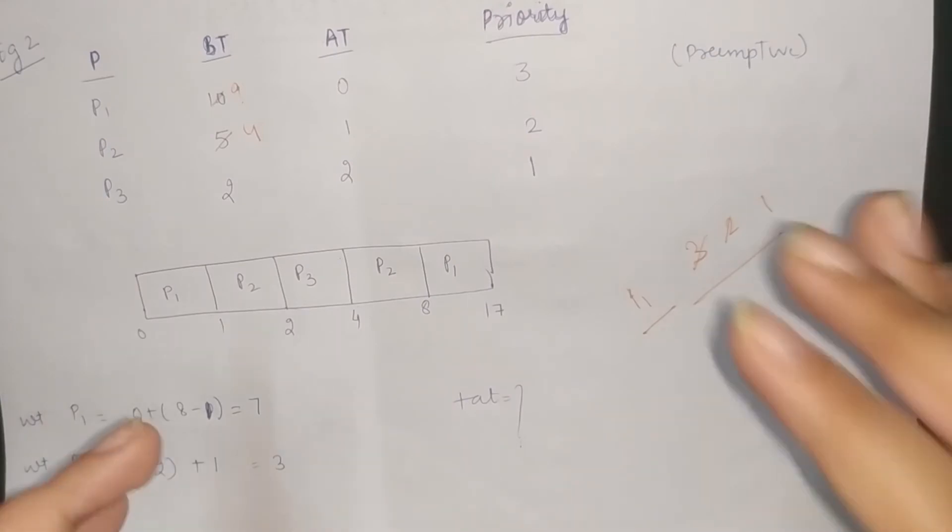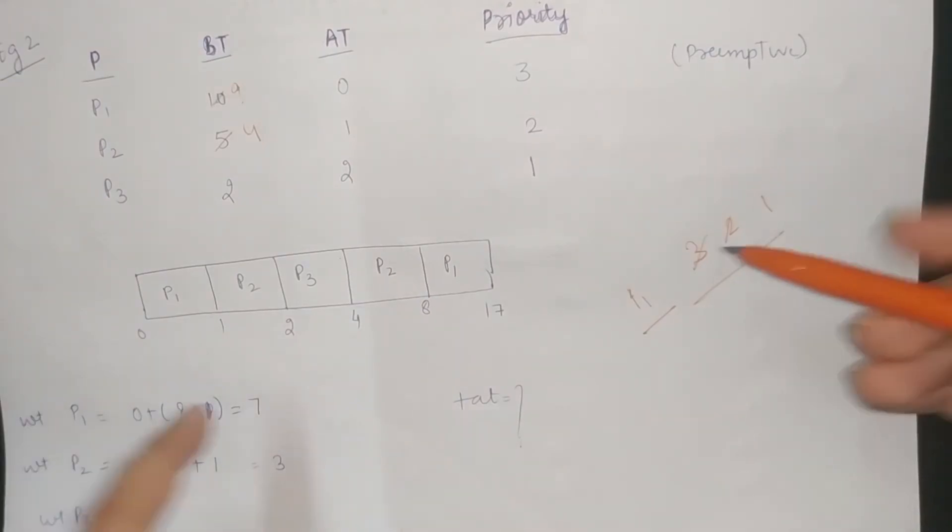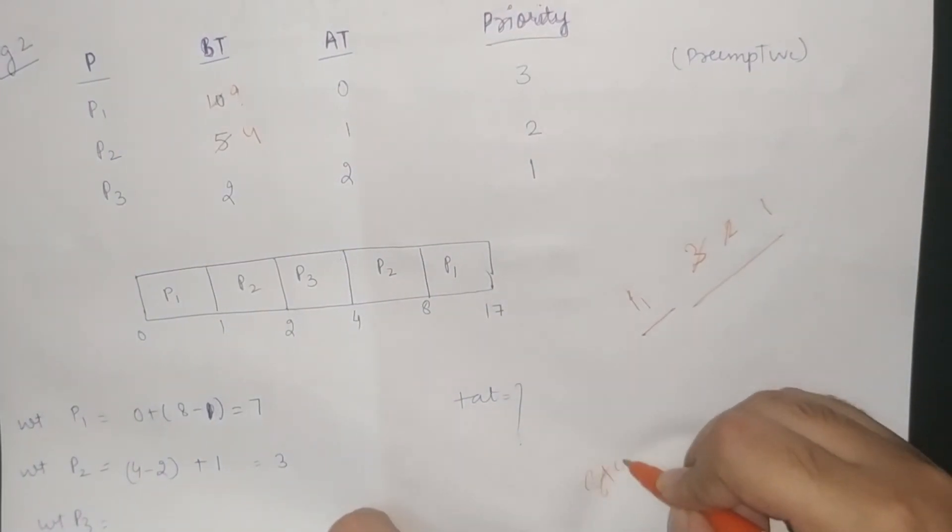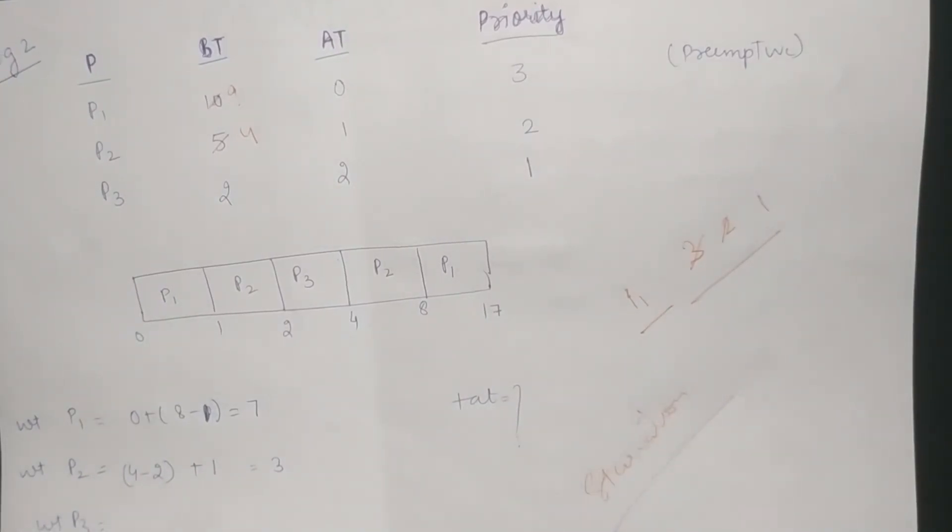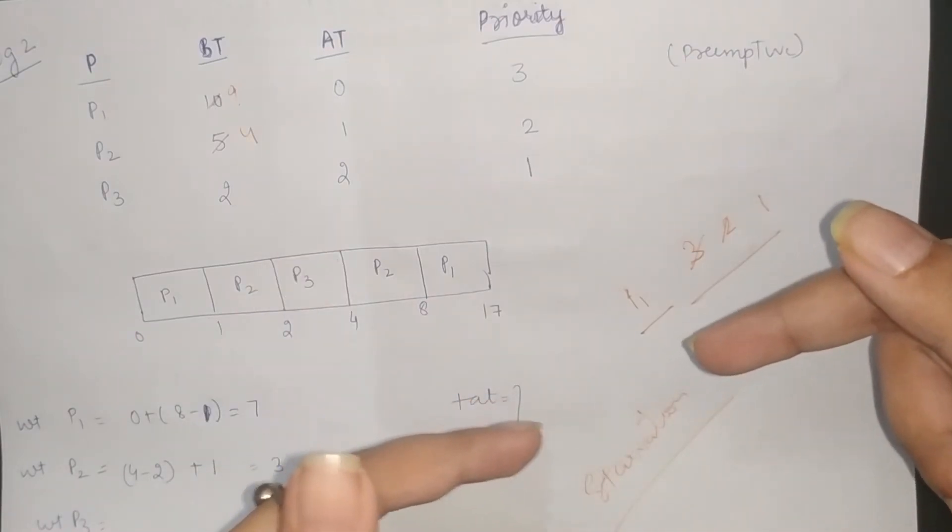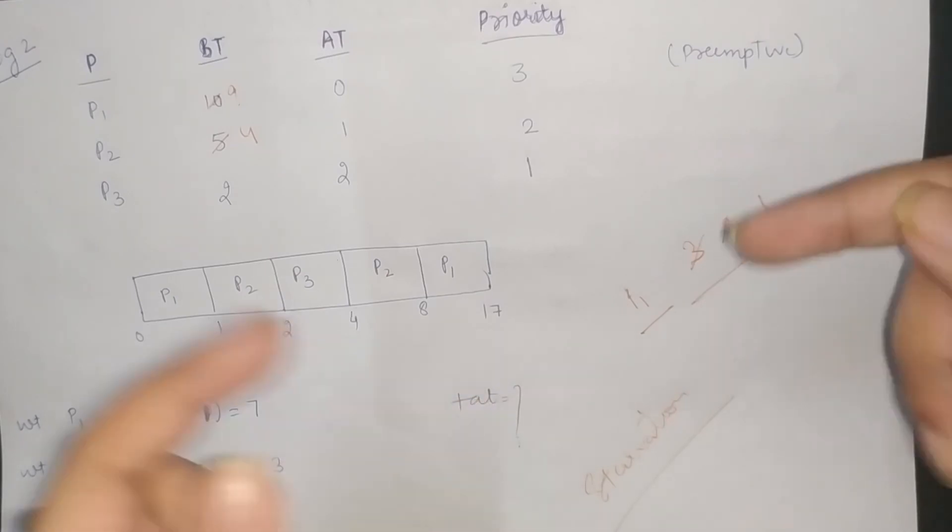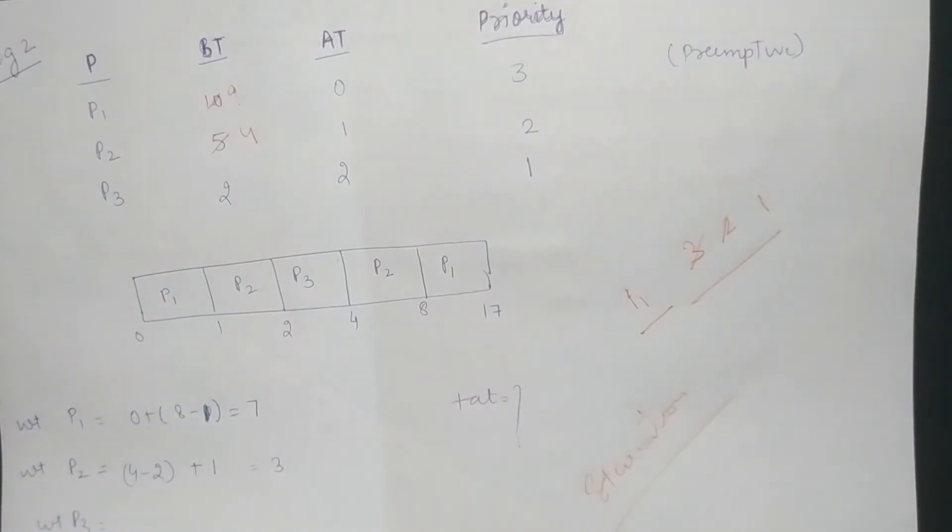And what is the disadvantage? The disadvantage that happens is starvation. Now, what is starvation? Starvation is a condition where the least priority processes are not able to execute because higher priority processes keep executing. When the least priority processes don't get a chance to execute,